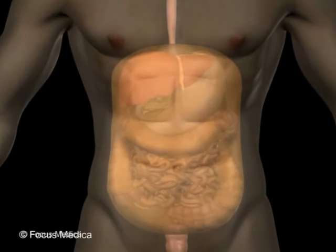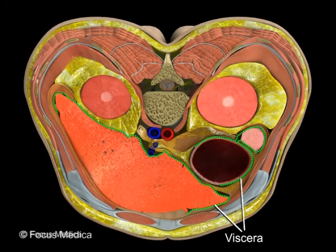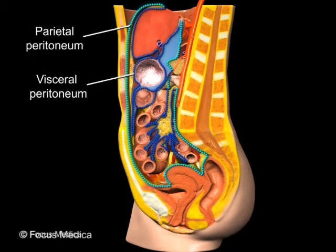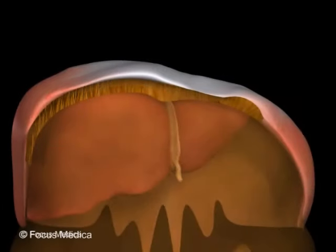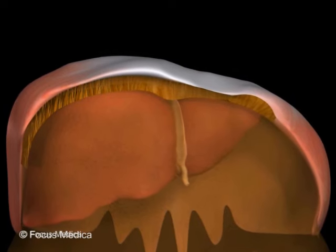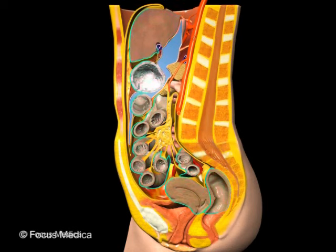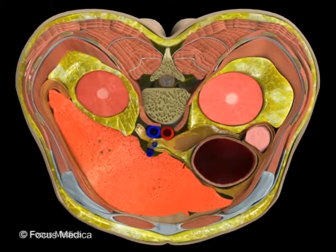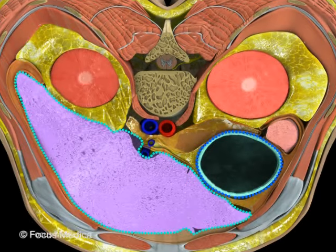The peritoneum is a smooth, serous membrane that lines the interior of the abdominal cavity and its viscera. It consists of the parietal peritoneum and the visceral peritoneum, which enclose the peritoneal cavity. The visceral peritoneum is thrown into several folds called ligaments, omenta, and mesentery, which suspend the visceral organs in the abdominal cavity. The main peritoneal cavity is the greater sac, and a smaller cavity called the lesser sac lies between the liver and the stomach, connected through the epiploic foramen.